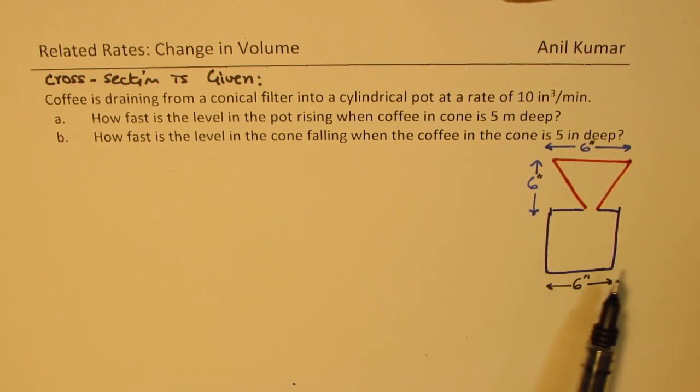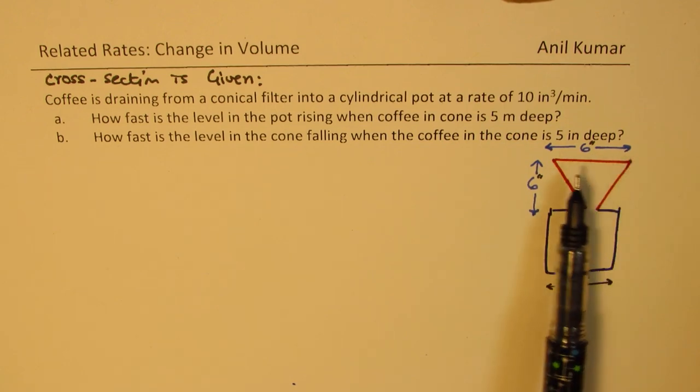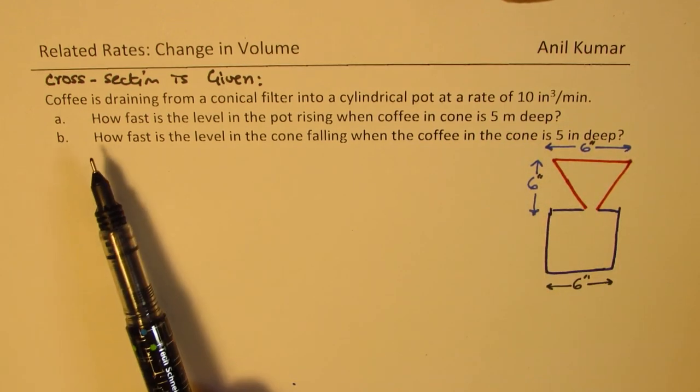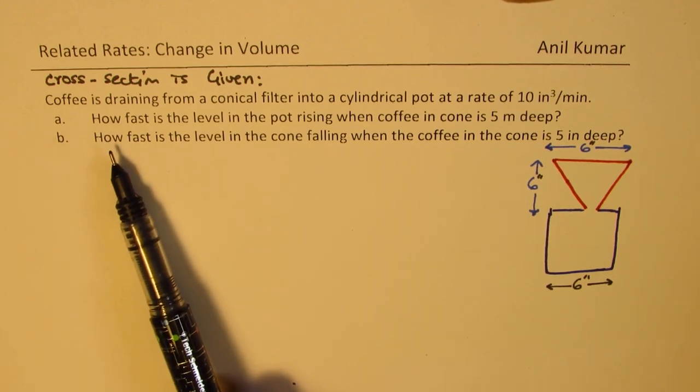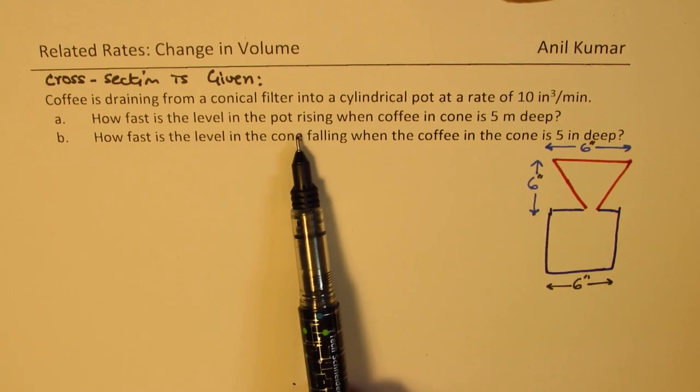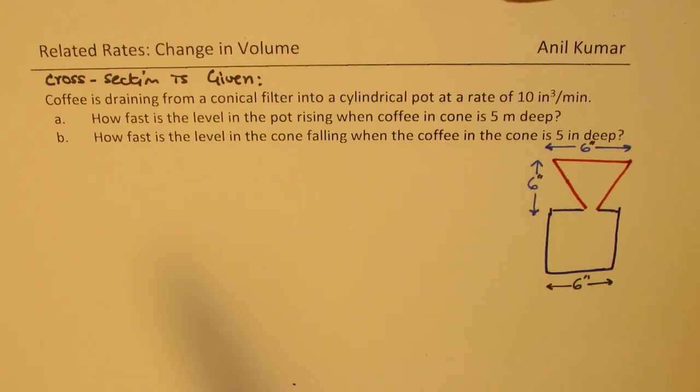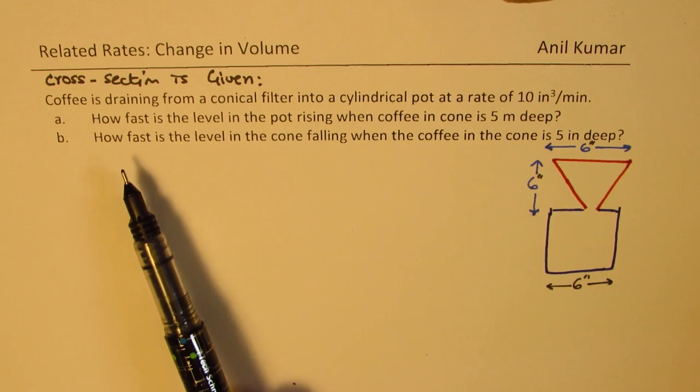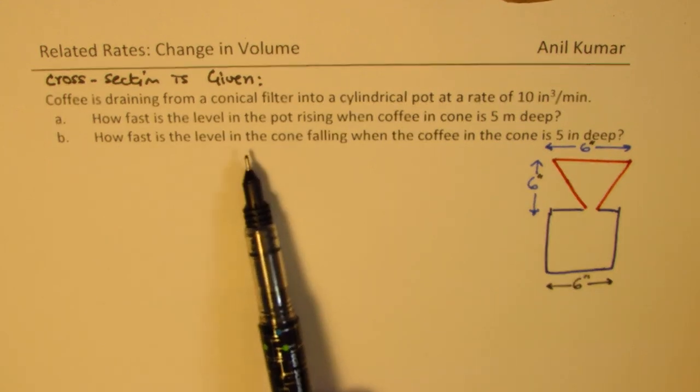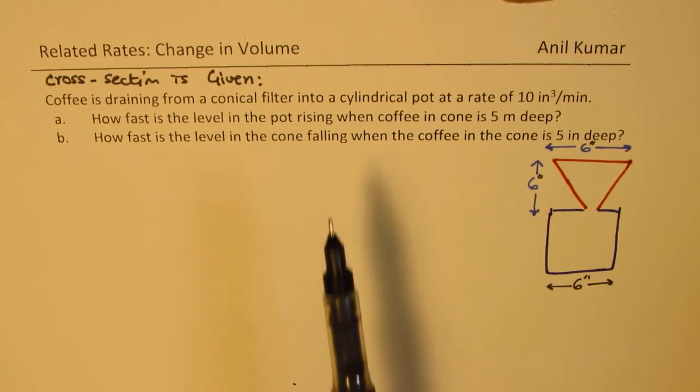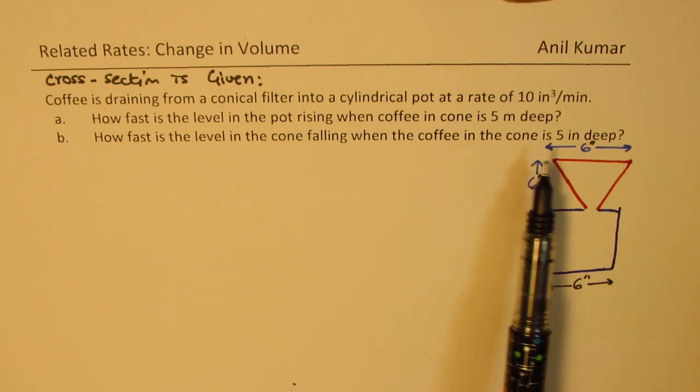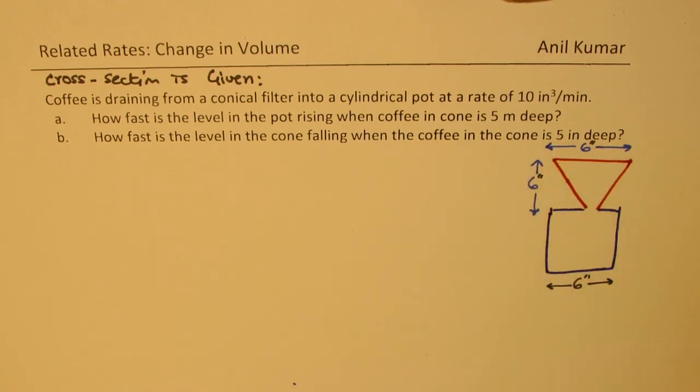Now both have same diameters. The height of the cone is 6 inches. Part A of the question is, how fast is the level in the pot rising when the coffee in the cone is 5 inches deep? And part B is, how fast is the level in the cone falling when the coffee in the cone is 5 inches deep?